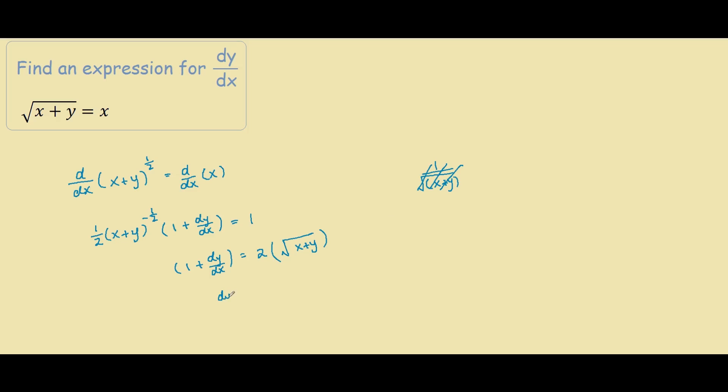Which is just to subtract 1 from both sides: 2 times square root of (x+y) minus 1, and that is your answer.